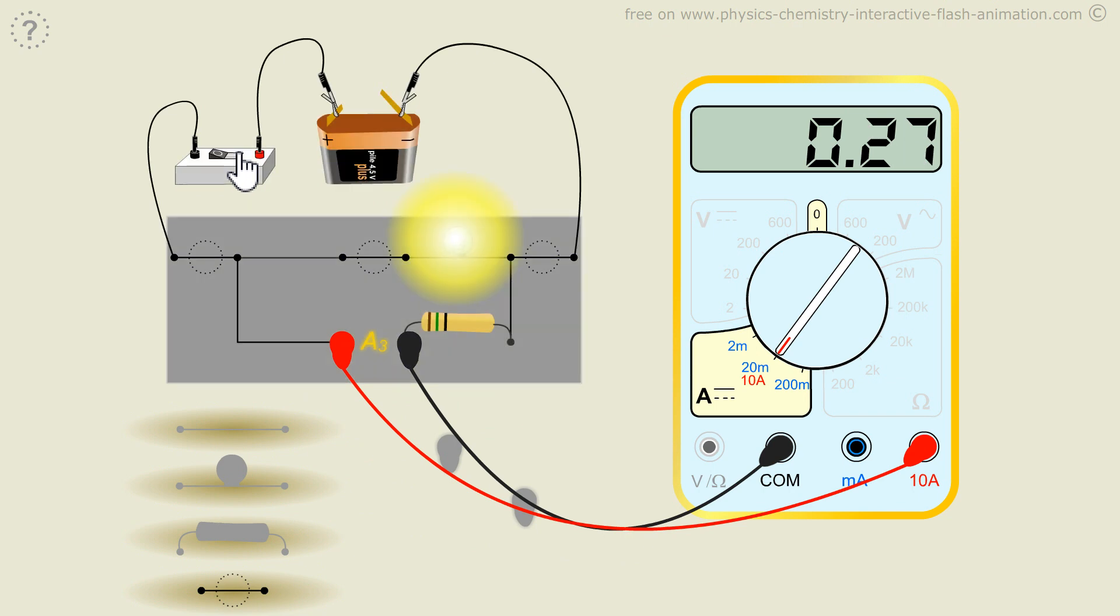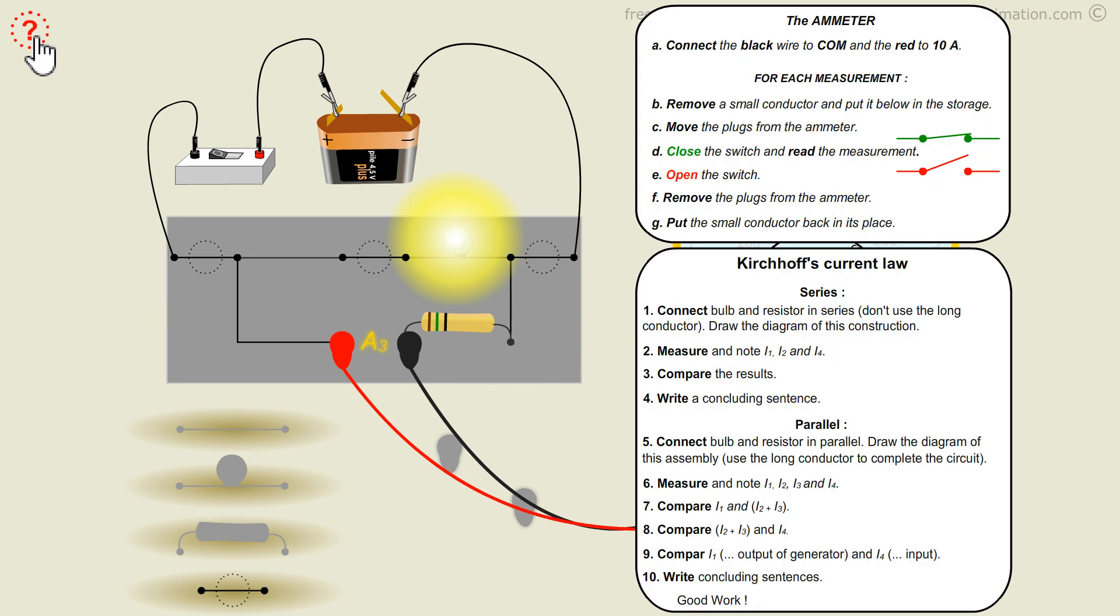It turns out that 0.29 plus 0.27 equals 0.56. So, the intensity in the main branch is equal to the sum of the derivative currents. We can also say, algebraic sum of the individual currents entering a junction or node will equal the currents leaving it.